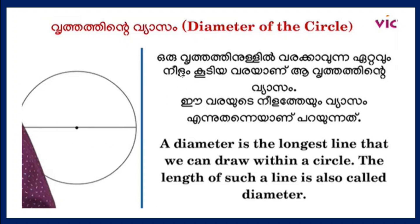This is the length of the circle — the length of a line across the circle. The length of such a line is also called the diameter.